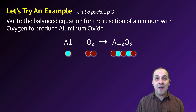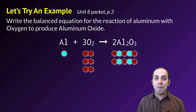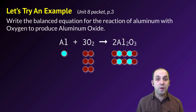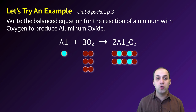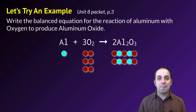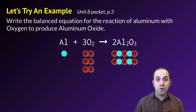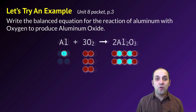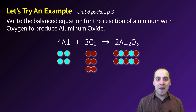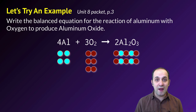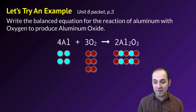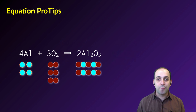Now let's balance. I'm going to balance oxygens first since that's the most complex. I start with two oxygens in my reactants and three in my products — I need six on both sides. So I'll put a 3 in front of O₂ in the reactants for six oxygen atoms, and a 2 in front of Al₂O₃ in the products for six oxygen atoms. That leaves aluminum: I have one in the reactants and four in the products, so I put a 4 in front of aluminum. That gives the balanced equation: 4Al + 3O₂ → 2Al₂O₃.